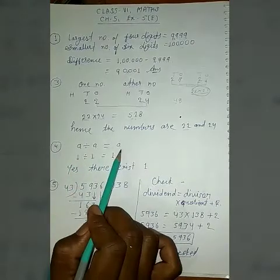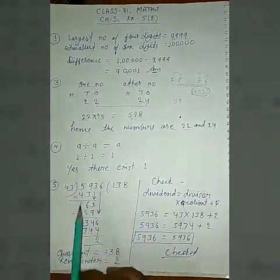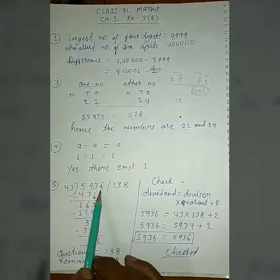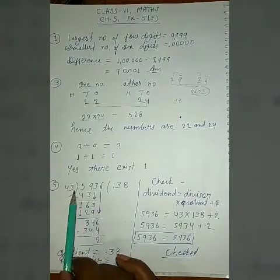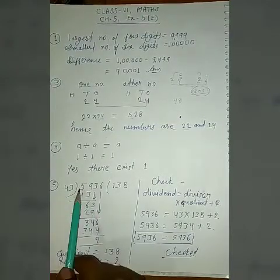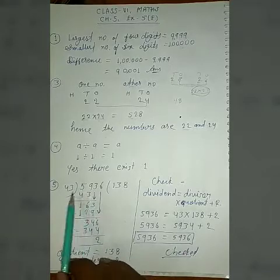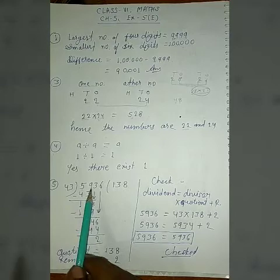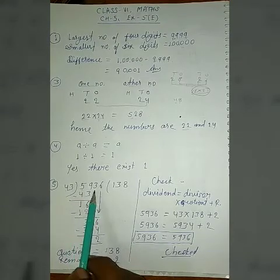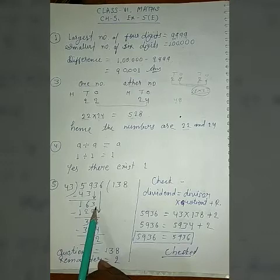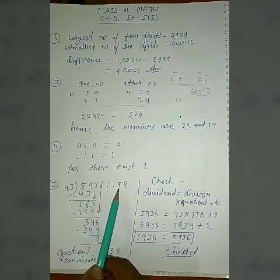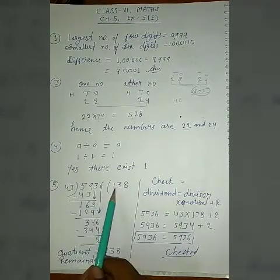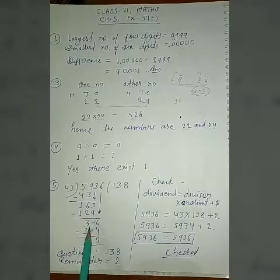Question number 5: 5936 divided by 43. We divide. It will be divided 1 time first. 43 times 1 is 43. Subtract it: 59 minus 43 is 16. Bring down 3. This is 163.